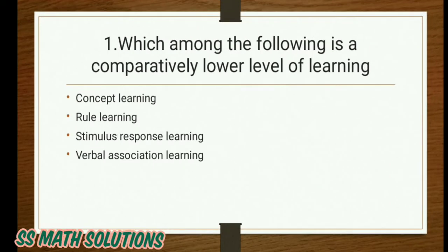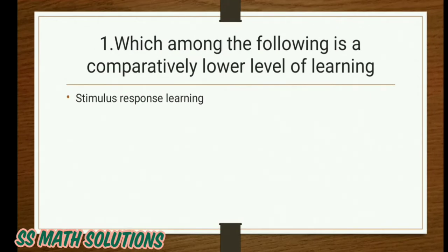Our first question: which among the following is a comparatively lower level of learning? Concept learning, rule learning, stimulus response learning, verbal association learning. The answer is stimulus response learning.